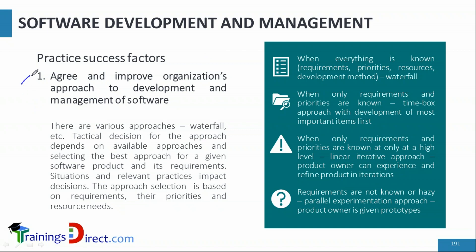Let's look more at the first PSF: agree and improve the approach. Various approaches exist — waterfall, agile, etc. Decisions must be made based on several factors. You may recall the comparison table from earlier in this course covering when agile is good and when waterfall is good. This could be important for the exam: when everything is known — requirements, priorities, resources, and method of development — waterfall is the right choice.